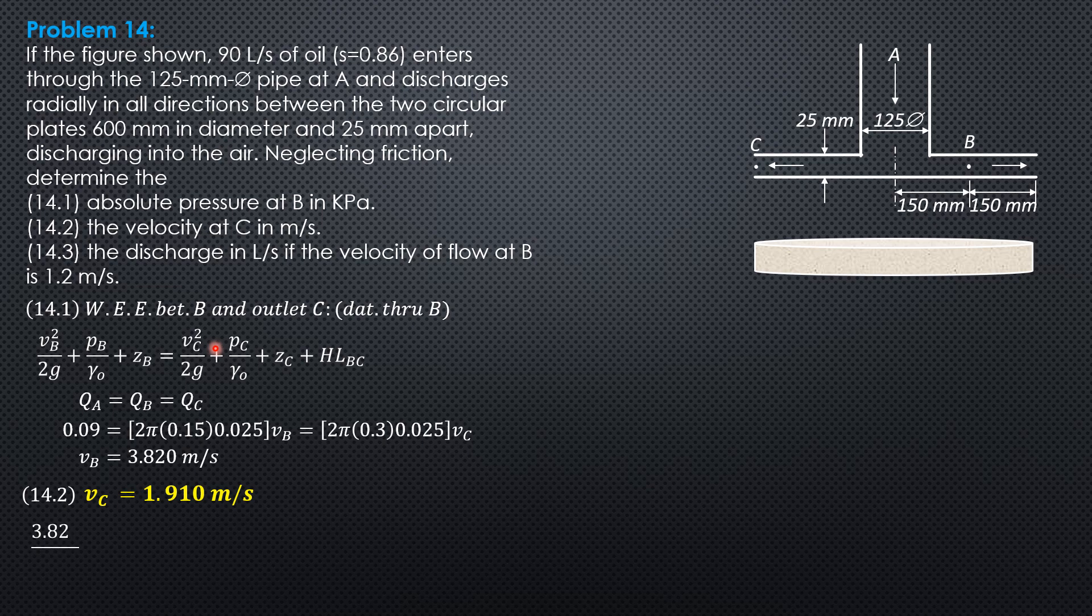Substituting into the equation: 3.82² over 19.62 plus pressure at B over (0.86 times 9.81) plus zero equals 1.91² over 19.62. Pressure head at C is zero, exposed to atmosphere. Elevation head is zero. So pressure at B is negative 4.706 kilopascals.